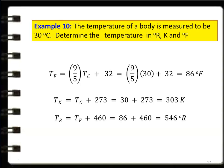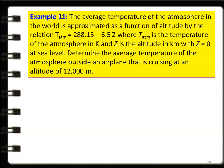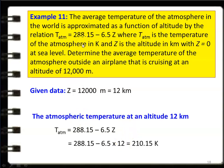Example 11: The average temperature of the atmosphere is approximated as a function of altitude by: T_atm = 288.15 − 6.5Z, where T is in Kelvin and Z is altitude in kilometers, with Z = 0 at sea level. Determine the average atmospheric temperature outside an airplane cruising at 12,000 m (Z = 12 km). T_atm = 288.15 − 6.5 × 12 = 210.15 K.